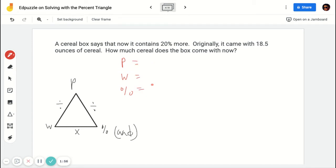So there's this reference to 20% more. And it says originally it was 18.5 ounces. When I hear the word originally or the old price or something like that, that's always the whole. That's always the 100%. So I mark that there. So this is what I'm looking for. I'm looking for the part. So I'm going to put the 18.5 down here in my triangle.